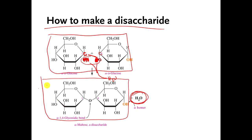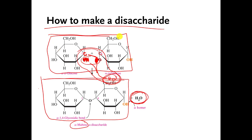This particular disaccharide has a name — it's called maltose. I don't care that you know that, but I do care that you know the general idea of how to connect the molecules. You rip the OH out, you rip the H out, you make a water molecule, and that ends up giving you a bigger molecule when you're done.